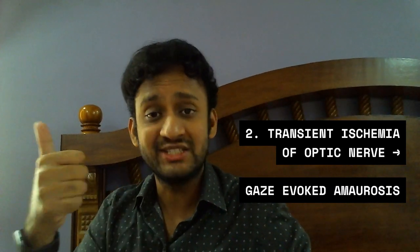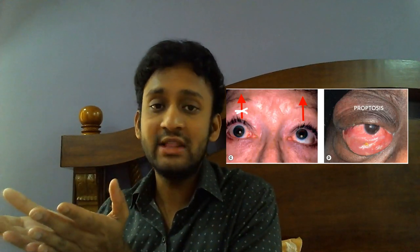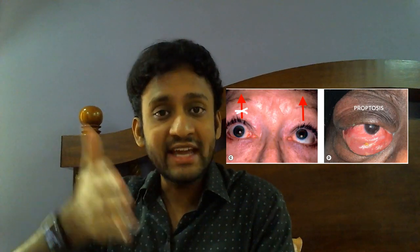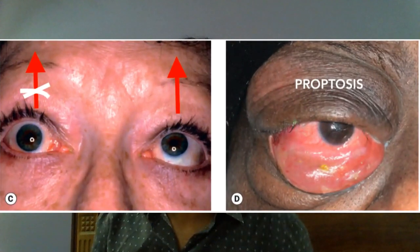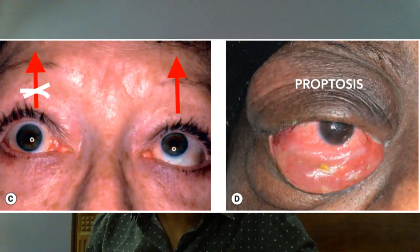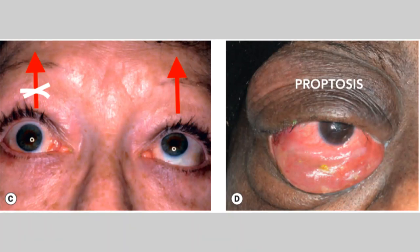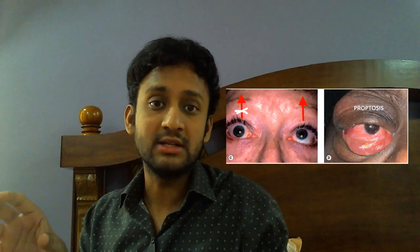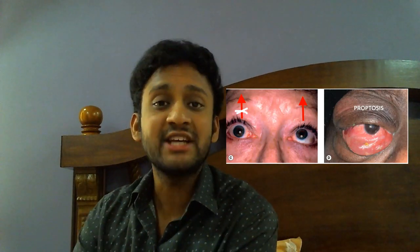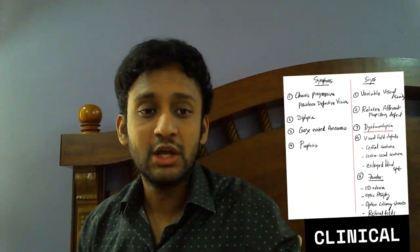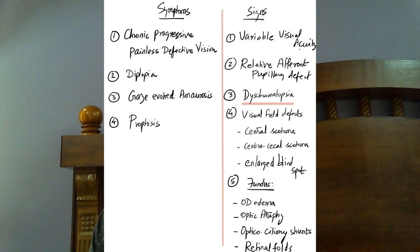Two vascular changes: optociliary shunts and transient ischemia of the optic nerve. Now, as intraorbital pressure rises, the eyeball bulges out — that is proptosis. Looking at this patient trying to look up, the left eye elevates but the right eye does not. The tumor has engulfed the extraocular muscle — probably superior rectus — causing restrictive myopathy of the right eye. The patient may have diplopia as a primary complaint.